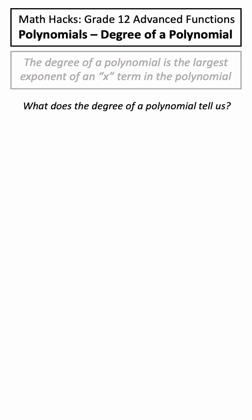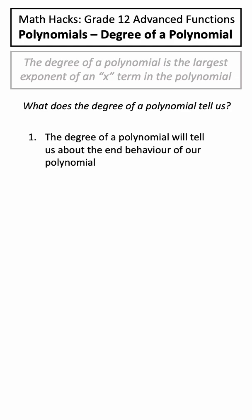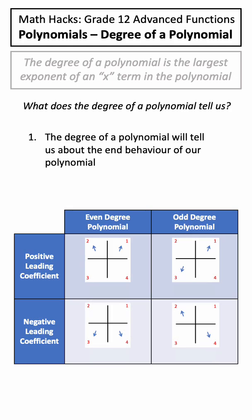So what does the degree of a polynomial tell us? Well, the first thing it does is it tells us about the end behavior of our polynomial. Looking at this table as a guide, you can see that an even degree polynomial or an odd degree polynomial will have different end behaviors.